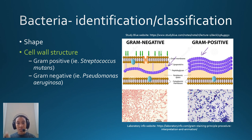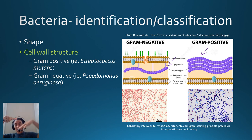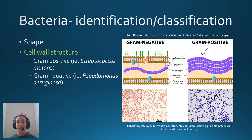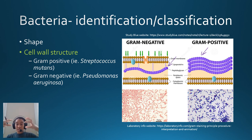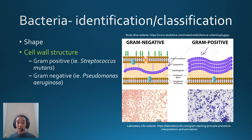In gram positive organisms, they have a thick peptidoglycan layer right outside the plasma membrane — so cytoplasm, plasma membrane, then peptidoglycan layer. These structural differences have an effect when you try to stain them. In microbiology we use a stain called crystal violet, which gets into the cell wall, binds there, and stains it purple — trapped in the peptidoglycan layer. In gram positives, when you wash that stain away, they remain purple because the dye is stuck in the thick peptidoglycan. In gram negatives, when you wash it away, almost all of it disappears, and you can counter-stain them with another dye.